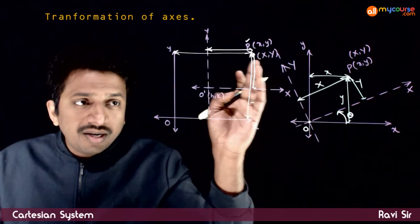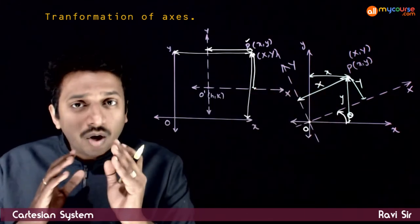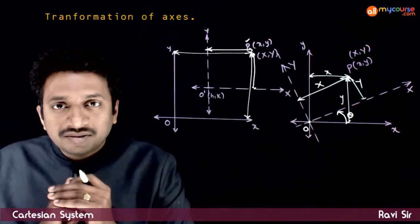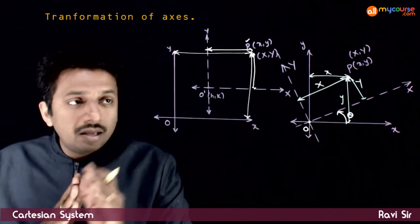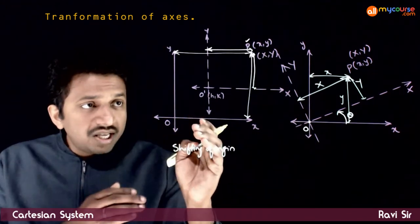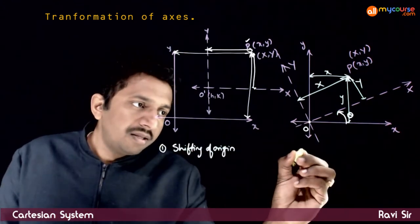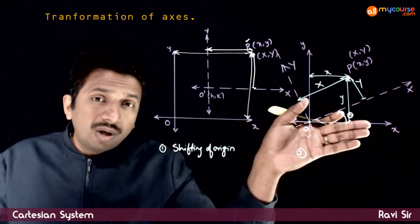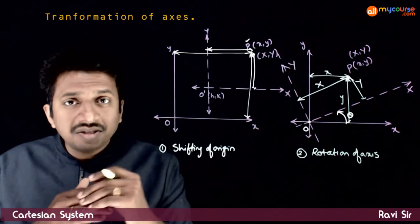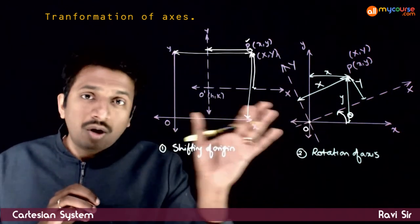Obviously, the new coordinates depend on the old coordinates in both cases. What we are going to see in this topic is the exact relation between the old coordinates and the new coordinates. So, there are two types of transformations: one is shifting of origin — without changing the direction of the x and y axes, we just take the origin to some other point. The second type is rotation of axis. We will understand what happens when you shift the origin and what happens when you rotate the axes, one by one.